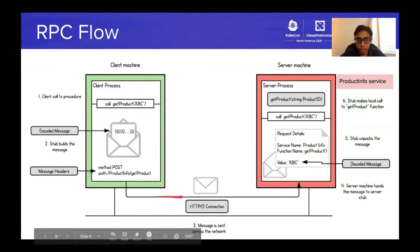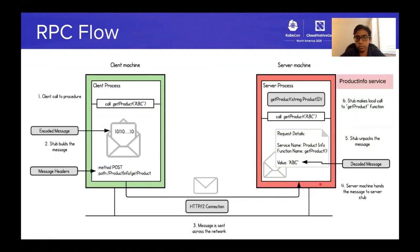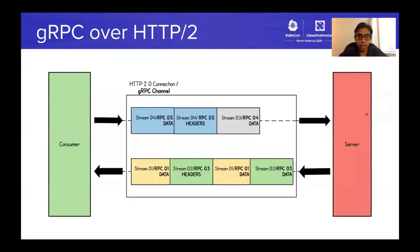The message is sent over the HTTP/2 connection. At the server side, the application looks at the path values, finds the corresponding stub, unpacks the message, converts it to language-specific data structures, and invokes the actual implementation of the remote function. The response then follows the same path back from the gRPC service.